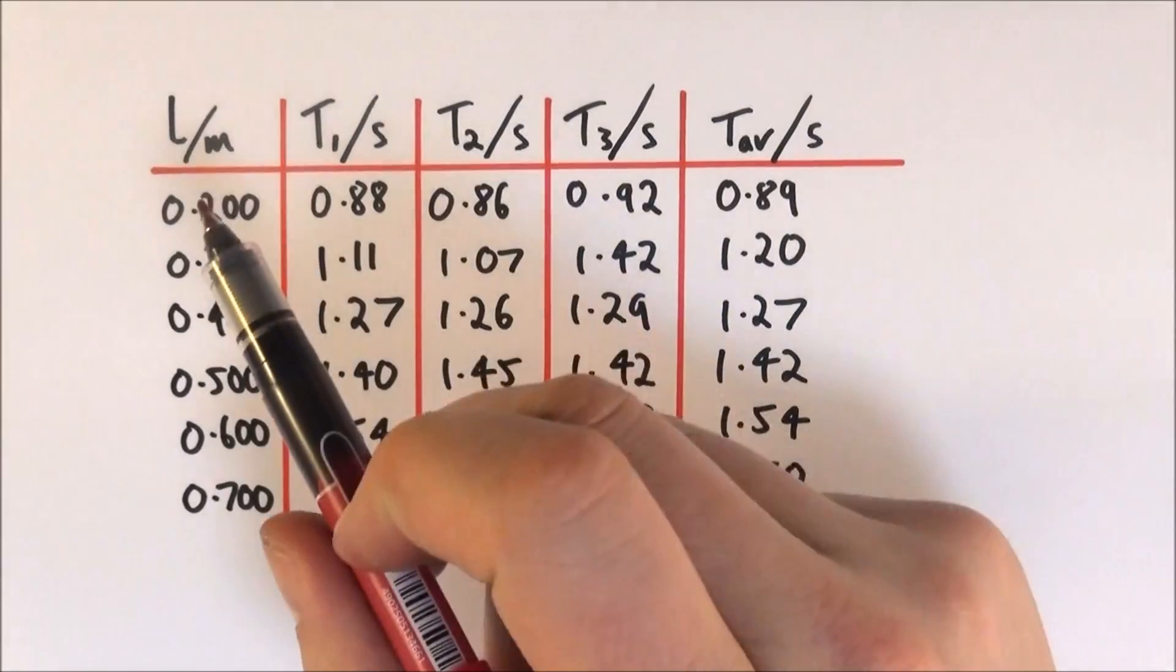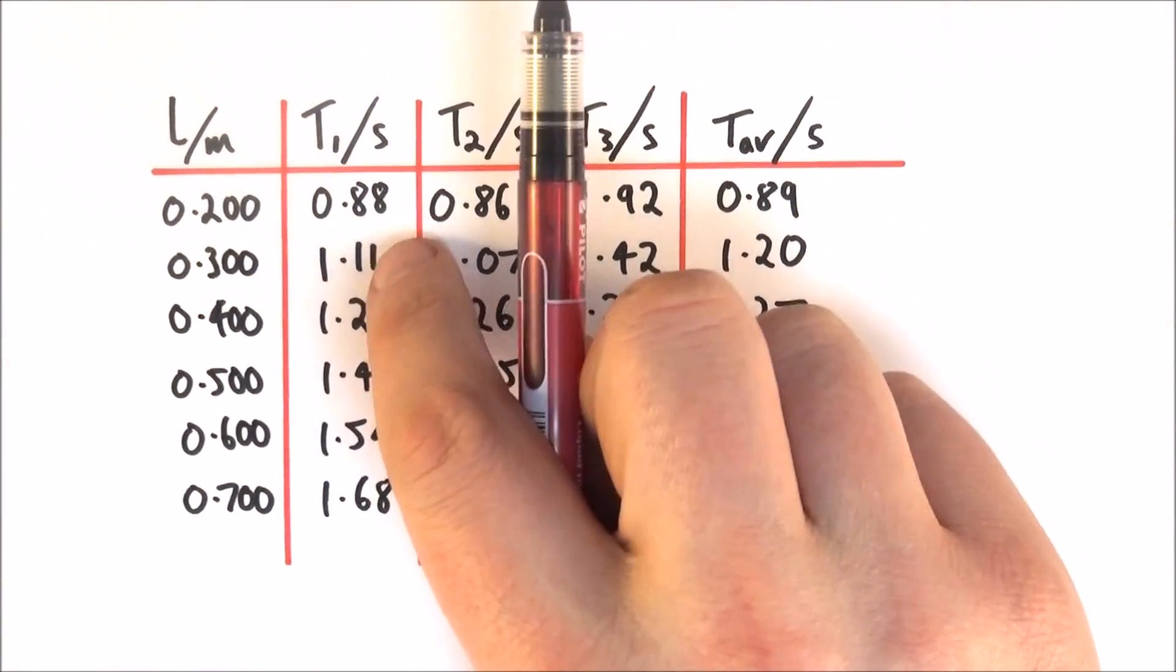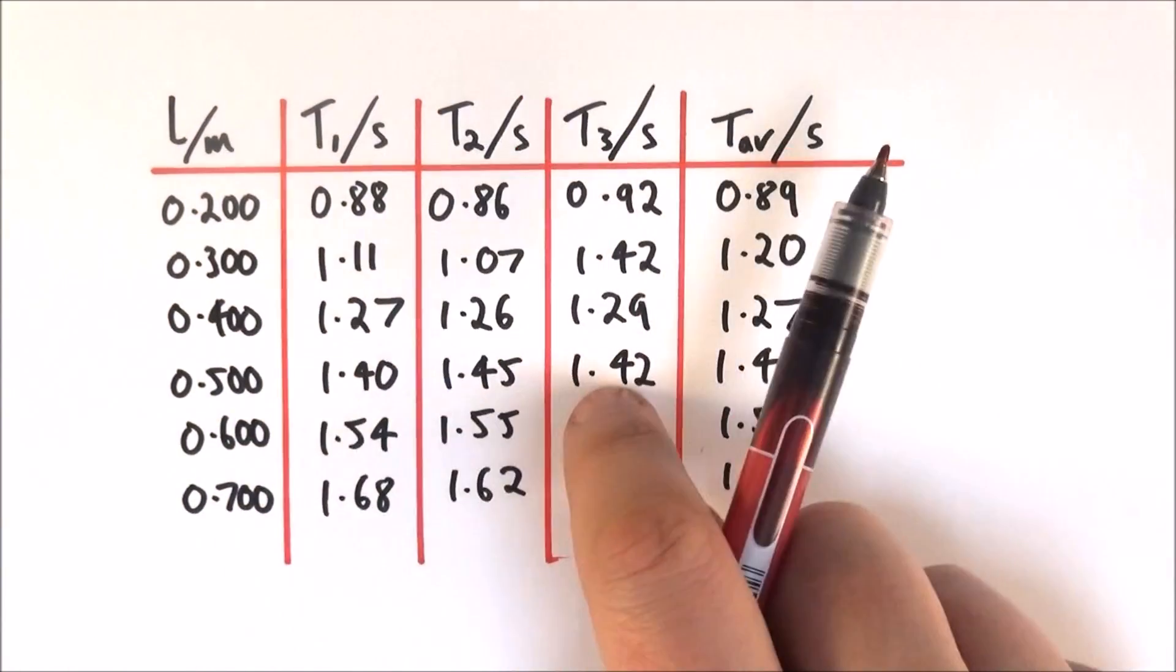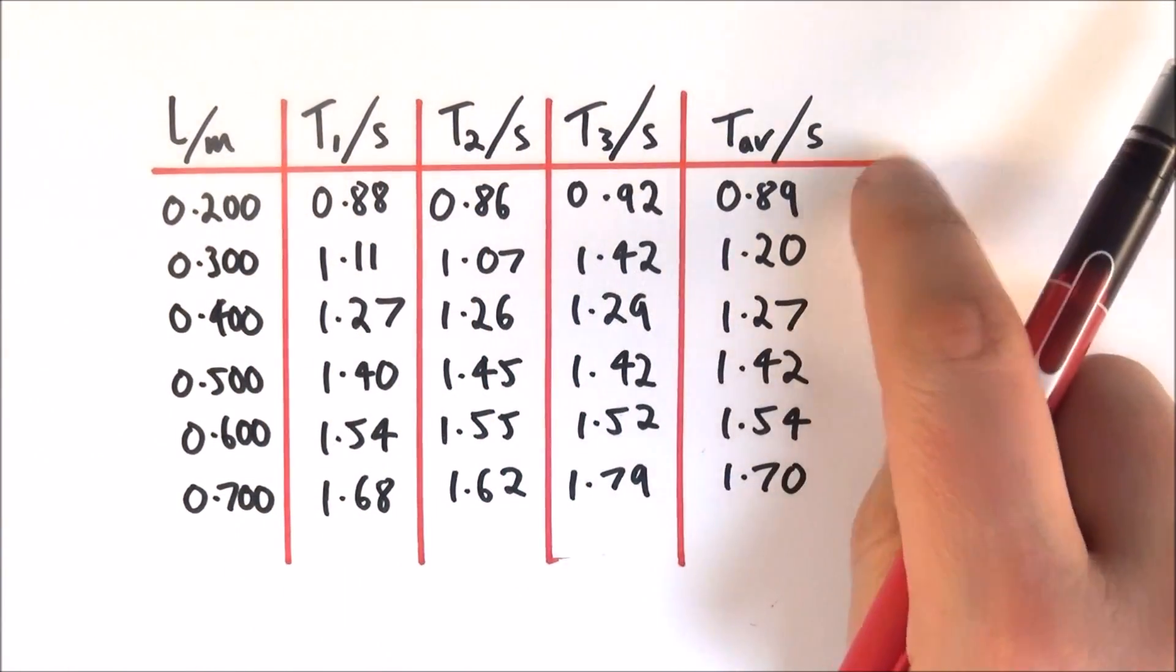So perhaps you're doing an experiment, maybe you're measuring the length of a pendulum and the time for an oscillation, and you record some data like this. So you've got your repeats and you've got your average.